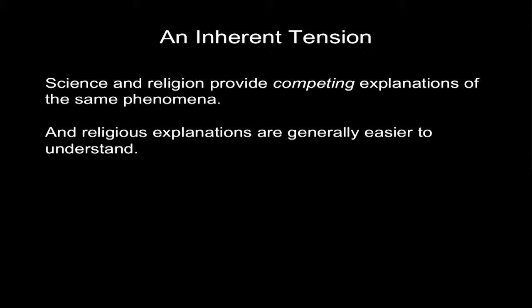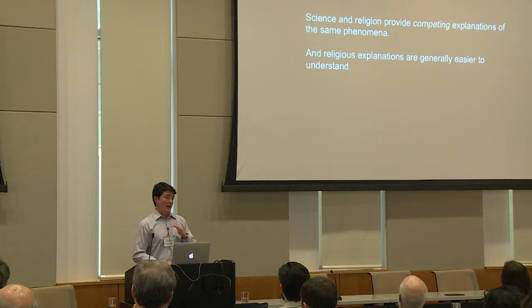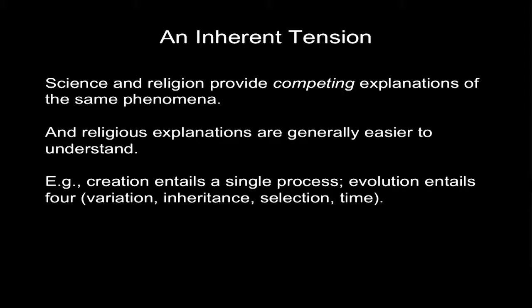There is an inherent tension between science and religion in that they both offer competing explanations of the same phenomena. This isn't great from the point of view of convincing the general public to accept scientific claims, because as many people have shown, religious explanations are generally easier to understand than scientific ones. Just to give one simple case in point, when it comes to biological adaptation, the religious explanation entails a single, well-understood process of intentional design, whereas the scientific explanation entails a combination of four independent processes: variation, inheritance, selection, and time. Empirical studies demonstrate that people really do have a difficult time with the scientific explanations, but don't seem to have as much difficulty understanding the religious ones.